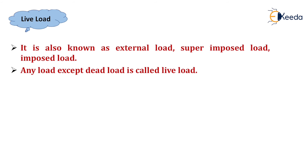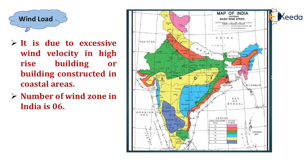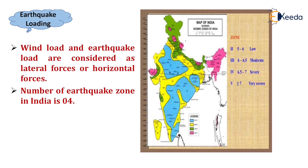Live load is also known as external load, superimposed load, or imposed load. Any load except dead load is called live load. Wind load is due to excessive wind velocity in high-rise buildings or buildings constructed in coastal areas. The number of wind zones in India is six. Wind load and earthquake load are considered as lateral or horizontal forces.